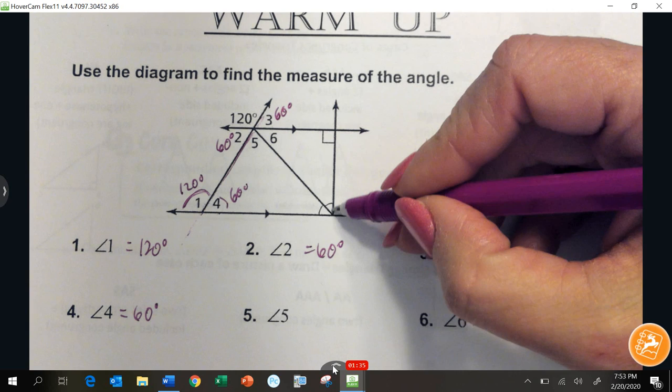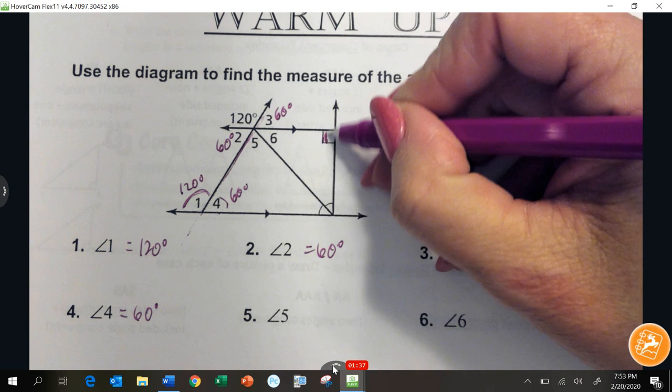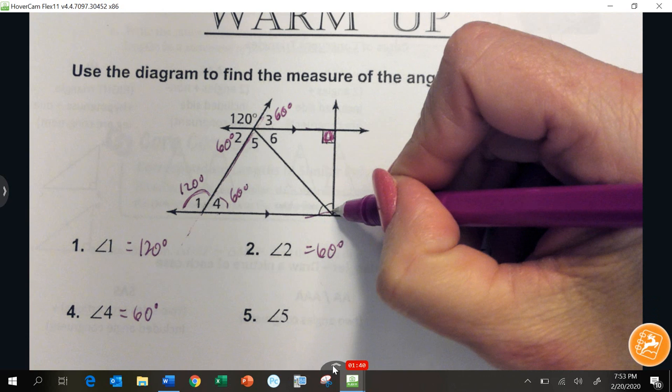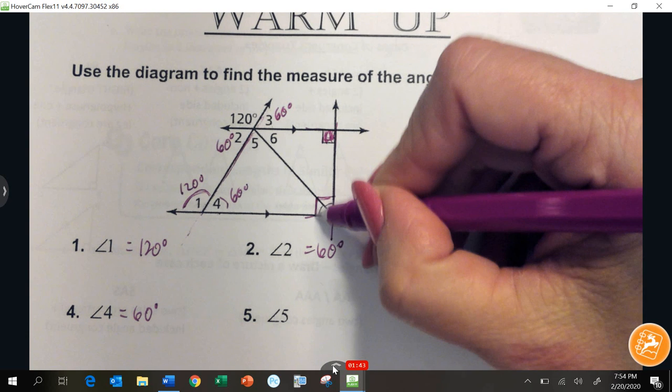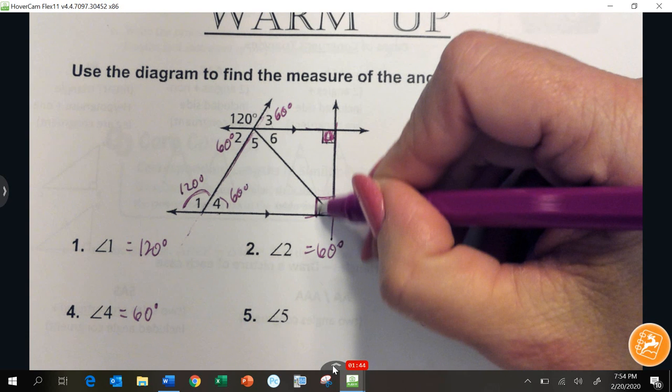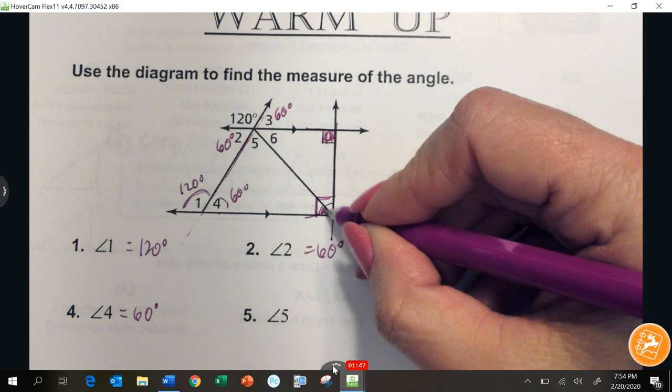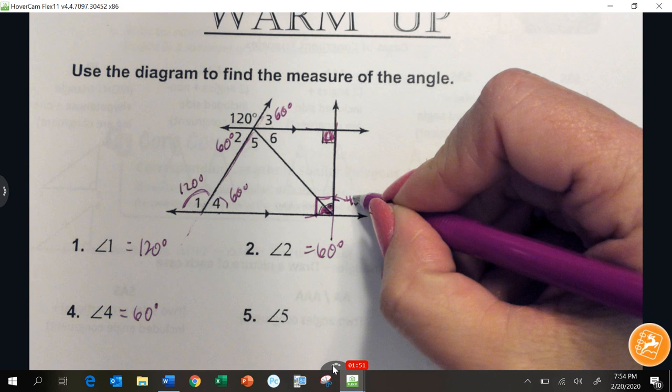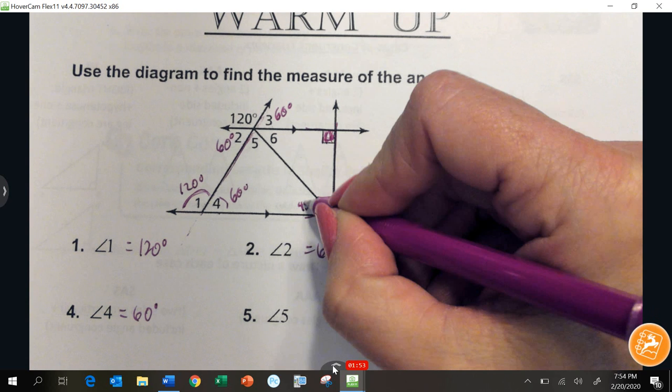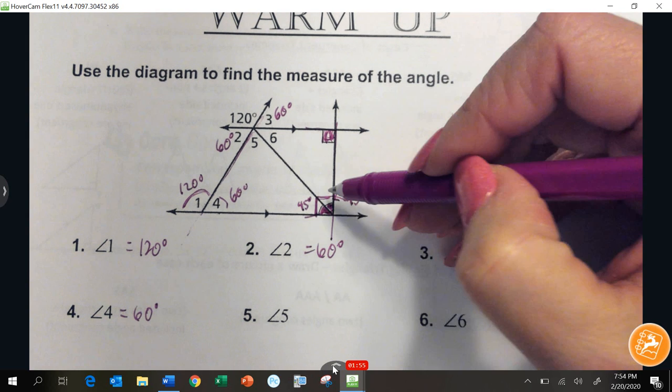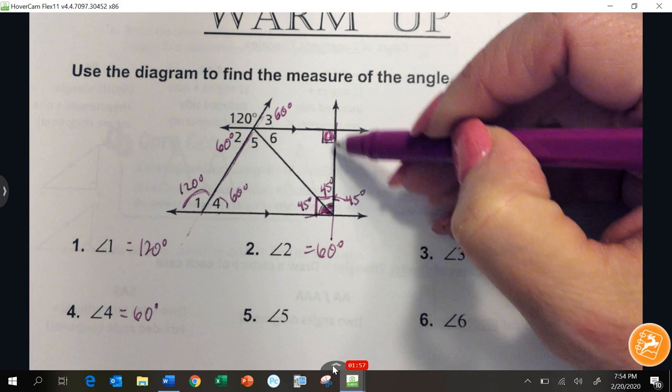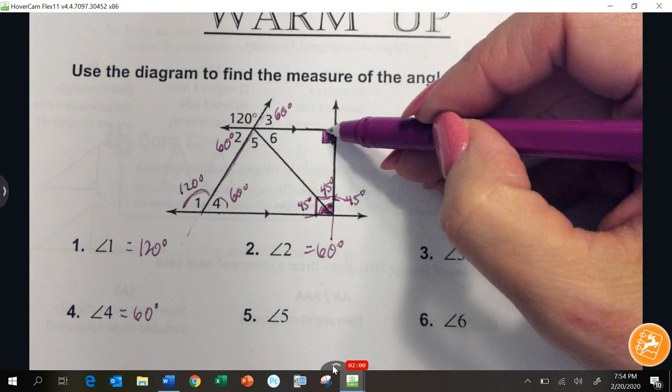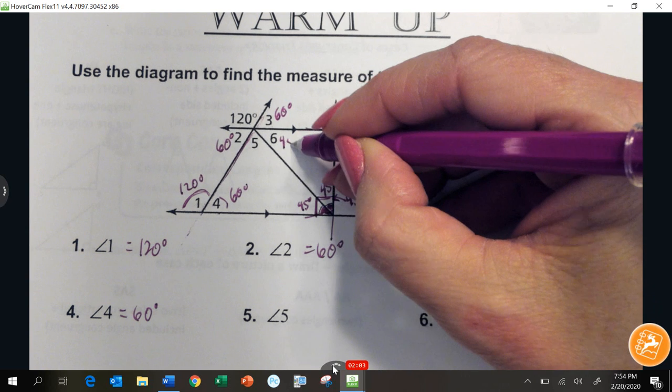What I did over here was I noticed that this is 90 degrees. We've got two parallel lines. We have a transversal, which makes this angle also congruent. Each of these triangles are marked congruent. So knowing that this one right here is 45 degrees and this one is 90, using the triangle sum theorem, we can figure out that angle 6 is also 45 degrees.